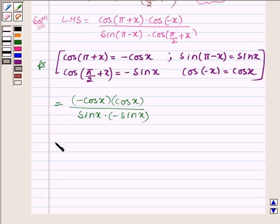So we have (-cos(x))(cos(x)) in the numerator, which is -cos²x. And in the denominator we have (sin(x))(-sin(x)) = -sin²x. Minus minus cancels out and we have